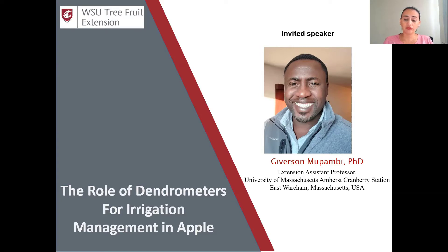Currently, his work is focused on improving fruit quality through the use of plant growth regulators and investigating the effect of agrophotovoltaic on canopy microclimate, photosynthetic capacity, fruit quality, and yield. Previously, he gained experience studying tree fruit physiology, and was a postdoctoral research fellow at Washington State University Tree Fruit Research and Extension Center.